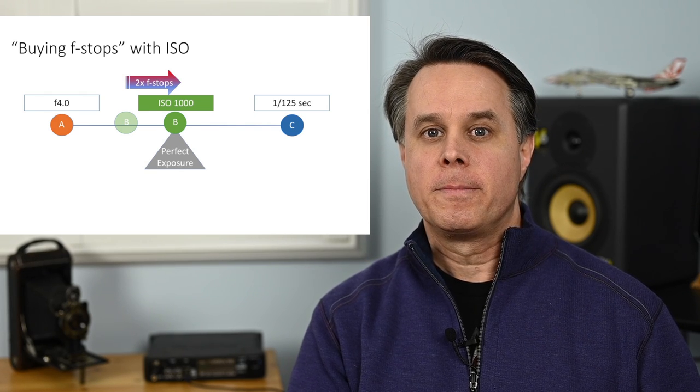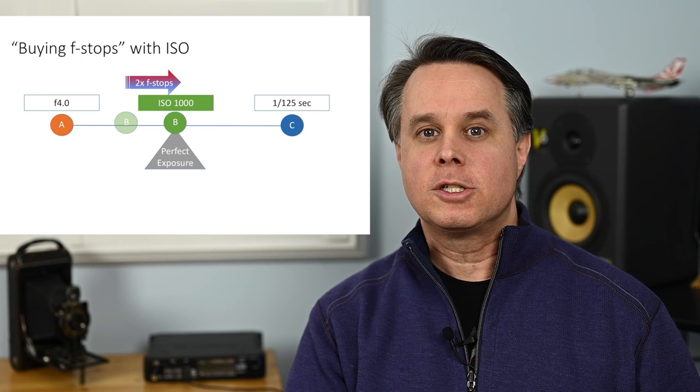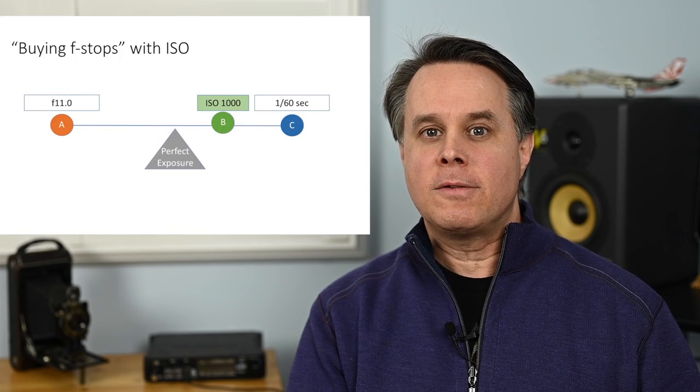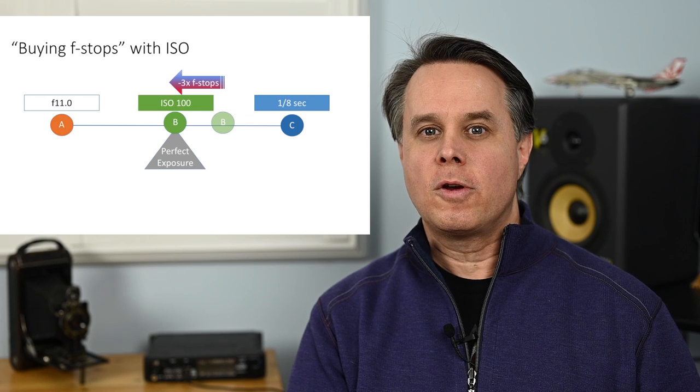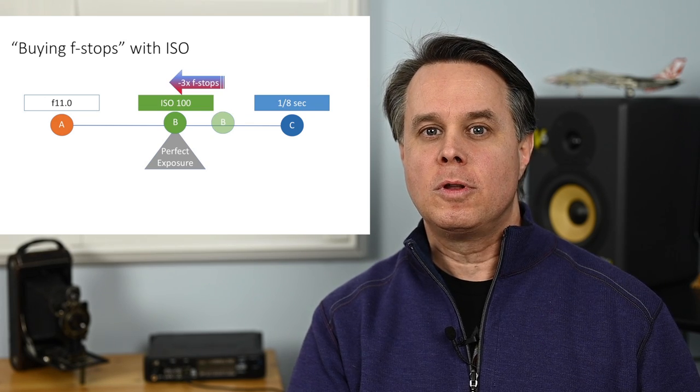Raising ISO allows you to offset situations where you need a faster shutter speed — like a live stage performance requiring 1/60th of a second or greater — or where you can't use a flash and need to shoot in lower light. There are times you'll need to make creative trade-offs between how much ISO you use versus going to a slower shutter speed.